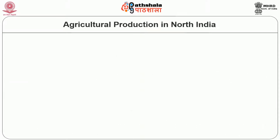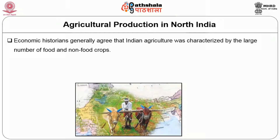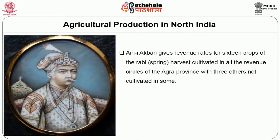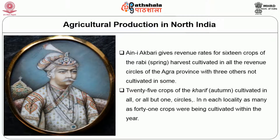Economic historians generally agree that Indian agriculture was characterized by a large number of food and non-food crops. In terms of sheer range of crops produced, Indian peasants were distinguished from their counterparts elsewhere in the world. For instance, the Ain-i-Akbari gives revenue rates for 16 crops of the Rabi spring harvest cultivated in all revenue circles of the Agra province, and 25 crops of the Kharif autumn harvest. In each locality, as many as 41 crops were being cultivated within a year.